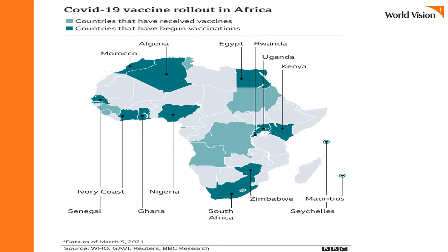This graphic shows which countries have received vaccines as of at least March 2021 and countries that have begun vaccinations. It is starting to roll out in Africa and in other continents, and for that reason we really need to be doing this sort of work now so that we better understand these drivers of vaccine acceptance, so that we can get our messaging and activities in place so people are ready for the vaccines when they're available.